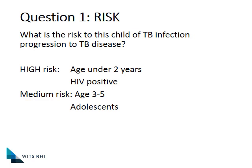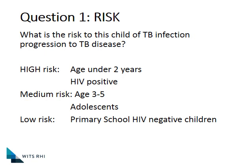That elevated risk persists until about five years old, though not quite as high as in the very young. Interestingly, once children are adolescents the risk goes up again, and adolescents seem more vulnerable to TB disease. But our HIV-negative primary school children have a much lower risk of TB infection progressing to TB disease. You will therefore have a different index of suspicion in an eight-year-old with a cough versus a two-year-old with a cough, both exposed to TB. To assess the risk, you must do an HIV test — you cannot make an assessment of TB disease unless you know the child's HIV status.